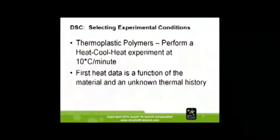Another way of doing a test is to perform a heat run. On the first heat, if you want to know what you've done to a polymer — say you've extruded it differently, or you've held it below its glass transition temperature, or you've held it above its glass transition, and you want to see what that does to the sample, or you would quench it — you want that first glass transition temperature; you want to know what that number is or what that melt is.